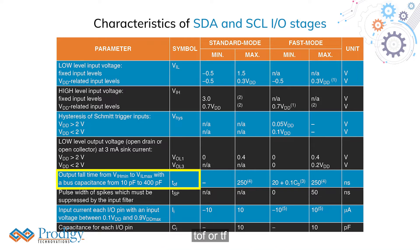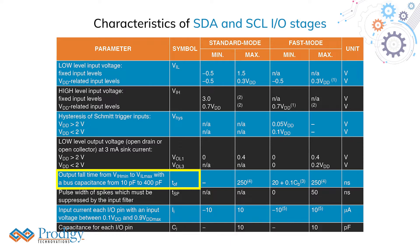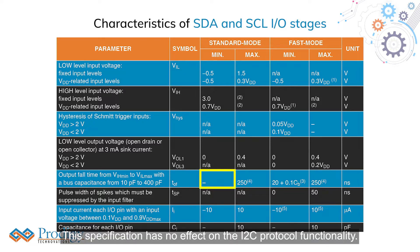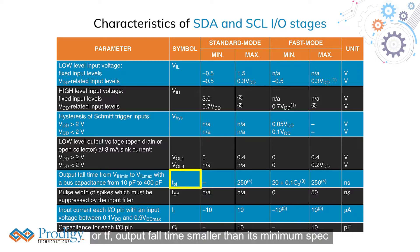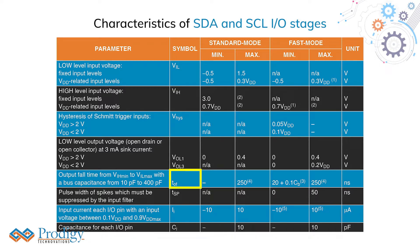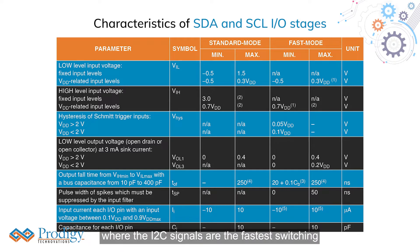TOF or TF Minimum Output Fall Time: This specification has no effect on the I2C protocol functionality. A faster edge rate of TOF or TF — output fall time smaller than its minimum spec — may solely affect the EMI on boards where the I2C signals are the fastest switching signals.